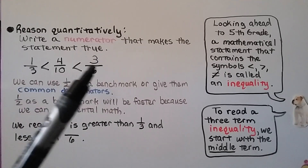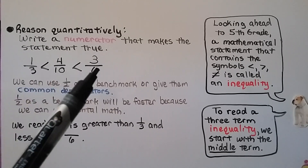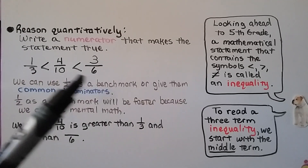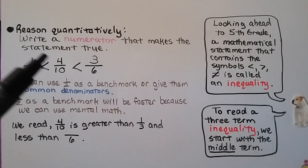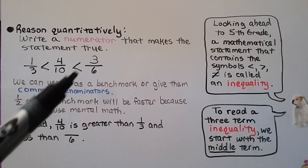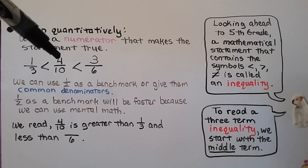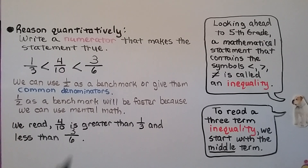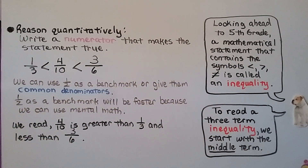Looking ahead to fifth grade: a mathematical statement that contains less than, greater than, or not-equal-to symbols is called an inequality. To read a three-term inequality, we start in the middle. This would be read as: four-tenths is greater than one-third and less than three-sixths. You'll be learning this in fifth grade — we start reading in the middle and say four-tenths is greater than one-third but less than three-sixths.